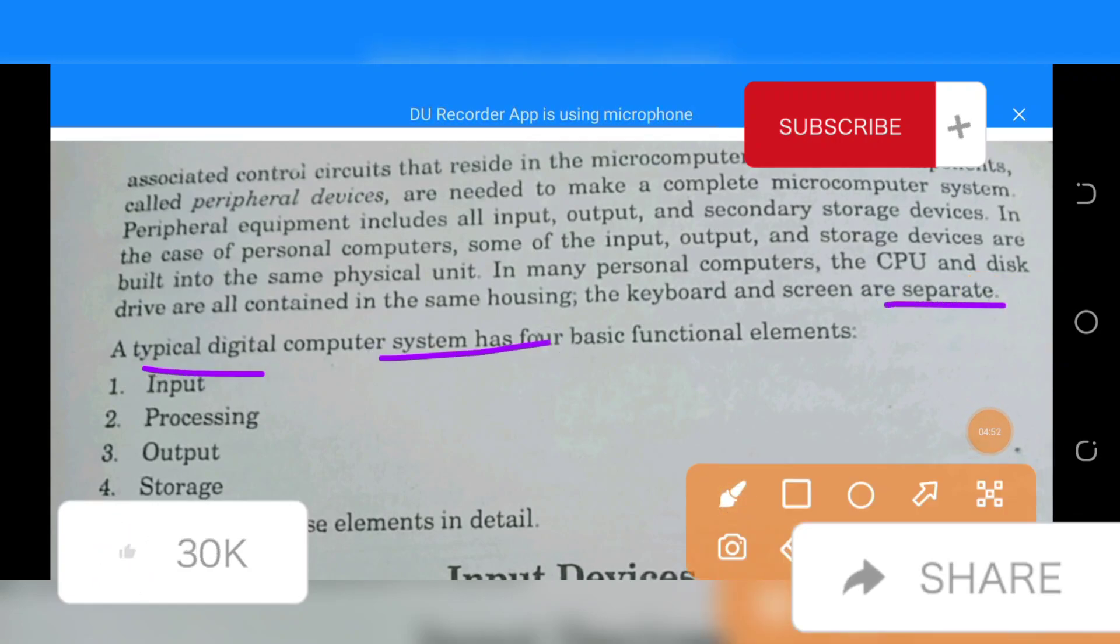A typical digital computer system has four basic functional elements: input, processing, output, and storage. Let us consider these elements in detail in the next video.